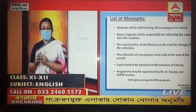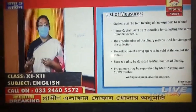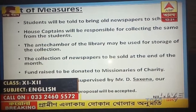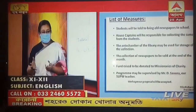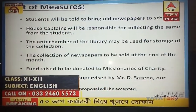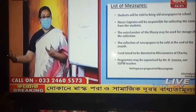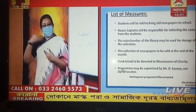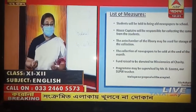Now your third step is done. The newspapers are collected and stored. Next, the newspapers need to be sold: the collection may be sold at the end of the month. Now the newspapers are sold and funds are in hand — you've already decided what to do with the funds. So the next step: the funds may be submitted to the Missionaries of Charity for welfare purposes. You can also think of writing that food materials may be purchased for the Missionaries of Charity with that fund.